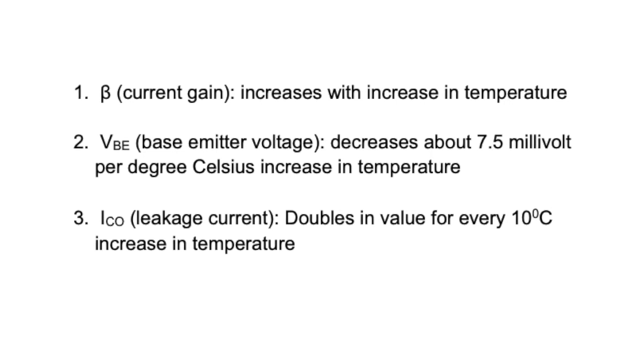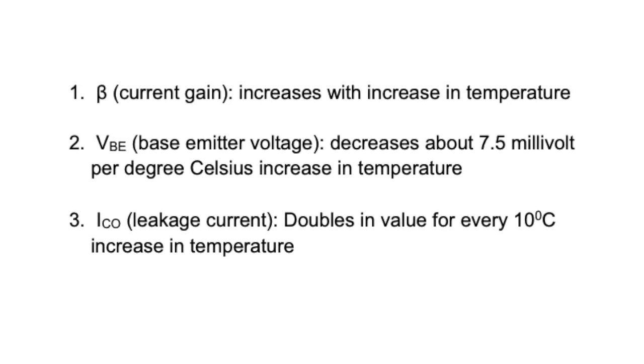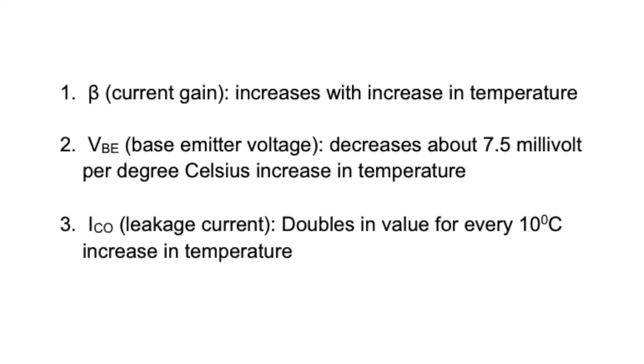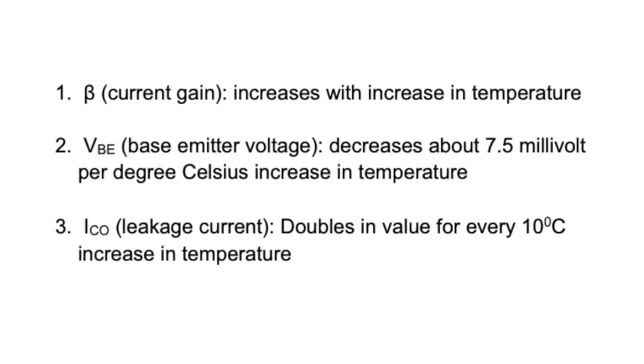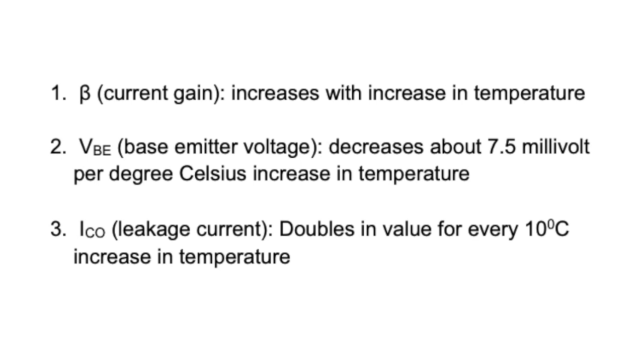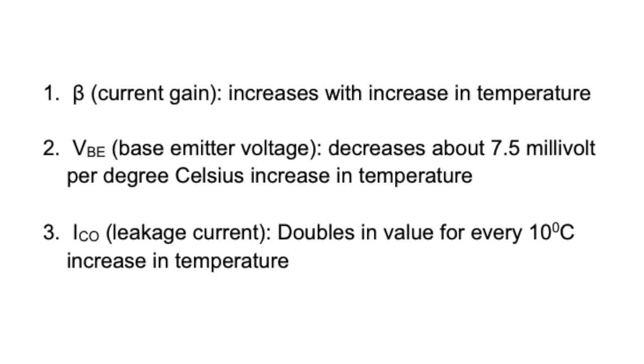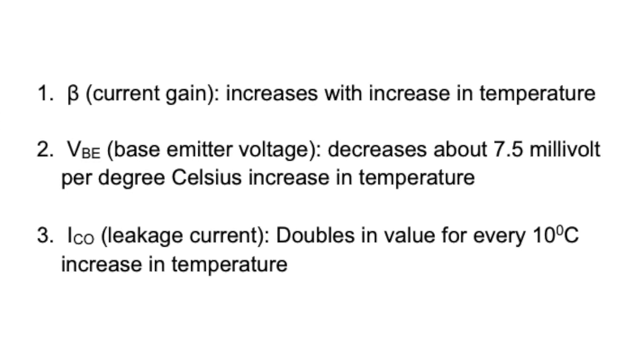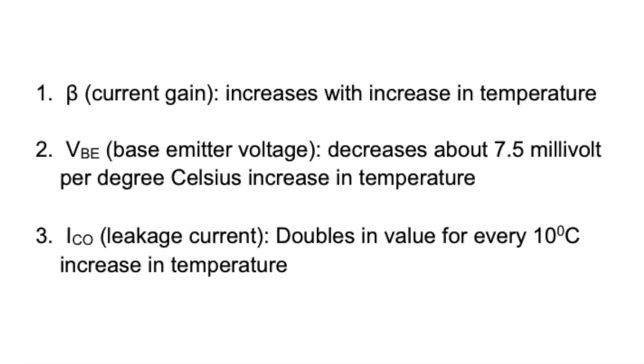Base emitter voltage VBE decreases about 7.5 millivolt per degree Celsius increase in temperature. The leakage current ICO doubles in value for every 10 degree Celsius increase in temperature. Any or all these factors can cause the bias point to drift from the design point of operation.